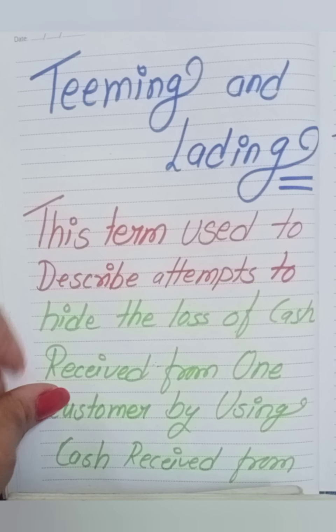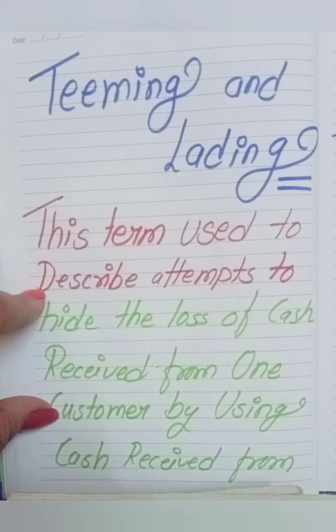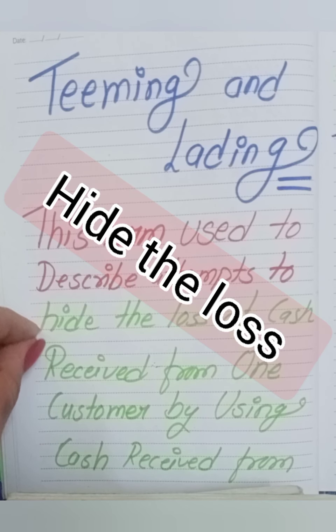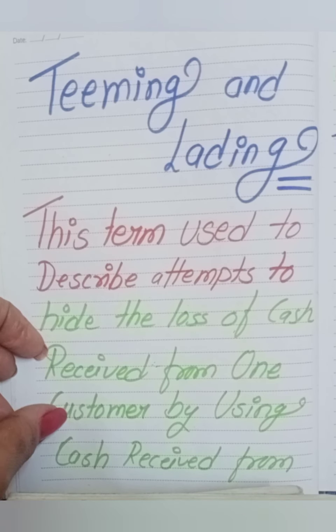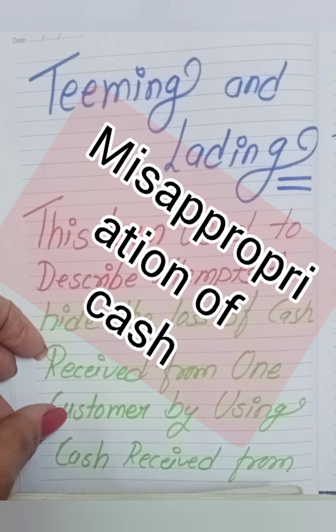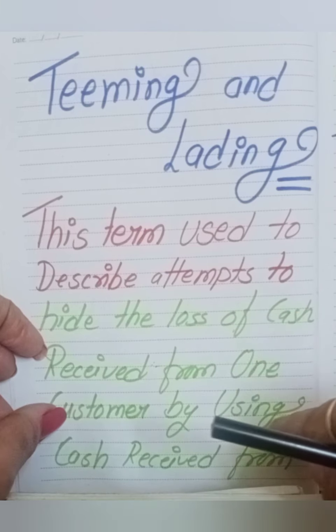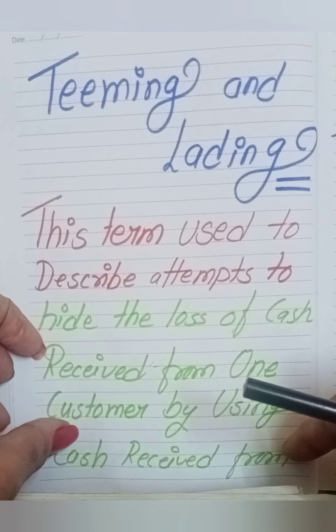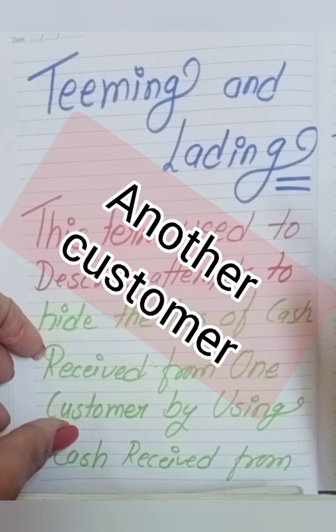Hello friends, today's topic is teeming and lading. Teeming and lading is a term used to describe attempts to hide the loss of cash received from one customer. If I have cash received, then I can hide the loss by using cash received from another customer to replace it.